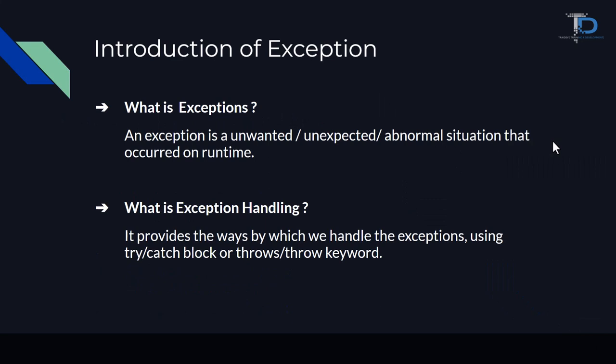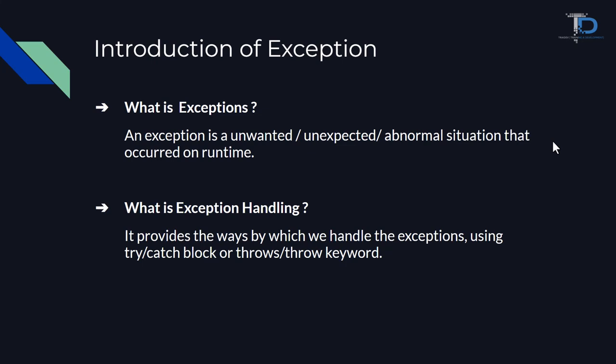Introduction of exception. What is an exception? An exception is an unwanted, unexpected, abnormal situation that occurs at run time. So when we run our program, something unwanted or unexpected happens — something we didn't anticipate, something abnormal that is not right. When this creates a problem or an error, we call it an exception.